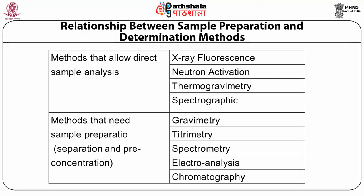There is a relationship between how a sample should be prepared before using any particular technique. Techniques where direct sample analysis can be done include X-ray fluorescence, neutron activation, thermogravimetry, and spectrographics. Whereas in the case of techniques like gravimetry, titrometry, spectrometry, electroanalysis, and chromatography, sample preparation and pre-concentration procedures need to be done.